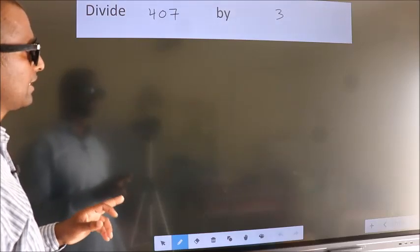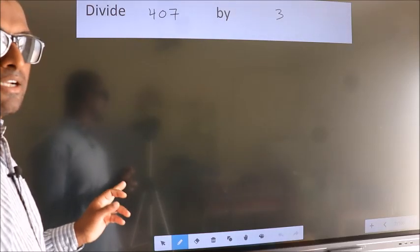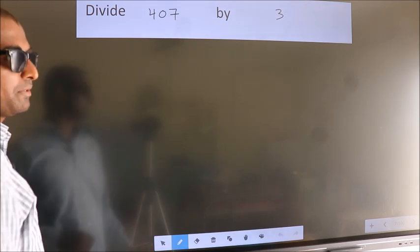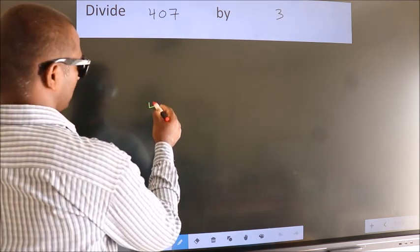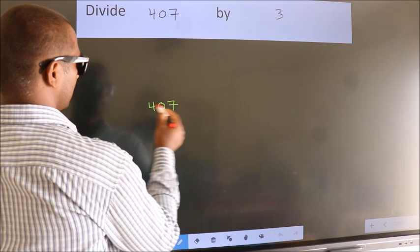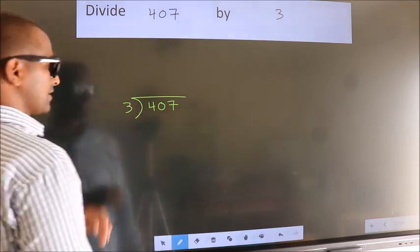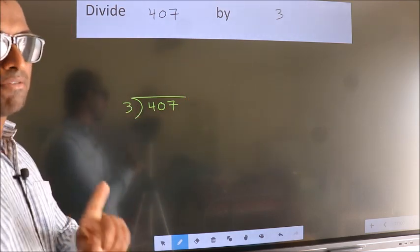Divide 407 by 3. To do this division, we should frame it in this way. 407 here, 3 here. This is your step 1.